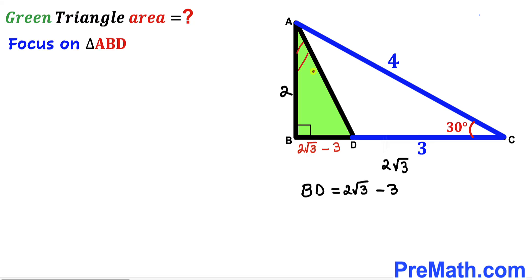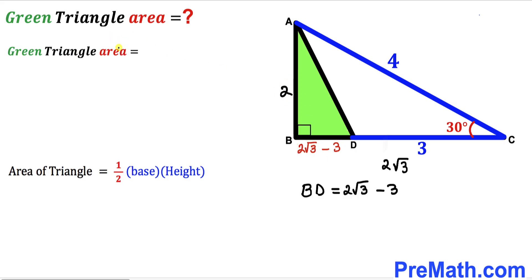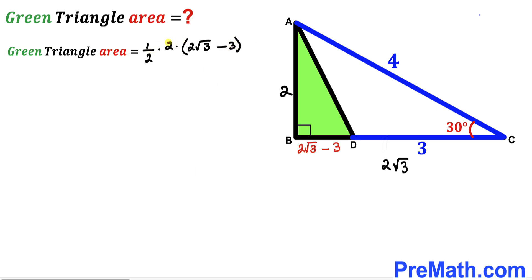Now let's focus on the green shaded right triangle ABD and calculate its area. Recalling the area formula: Area = ½ × base × height. The base of the green triangle is 2√3 − 3 and the height is 2. So the area = ½ × 2 × (2√3 − 3). The ½ and 2 cancel each other, giving us an area of 2√3 − 3 square units.